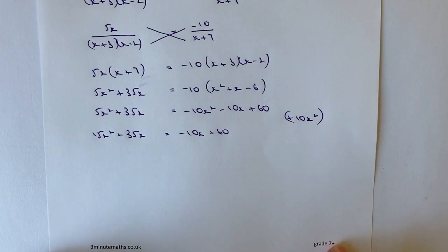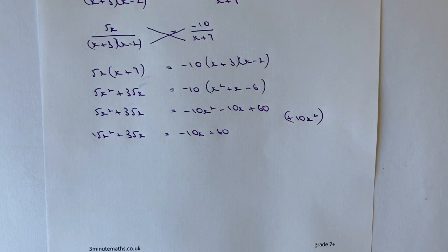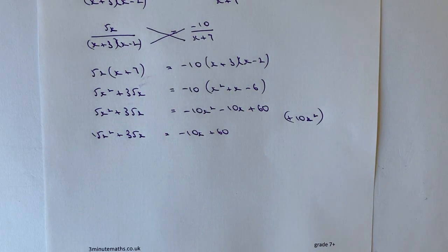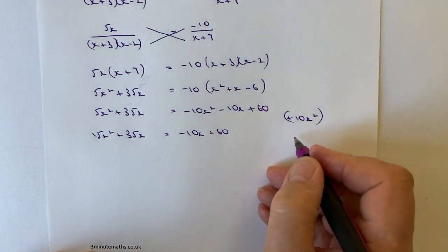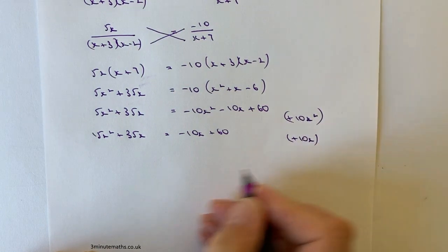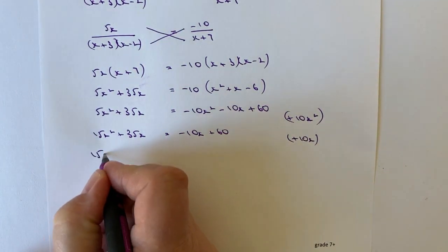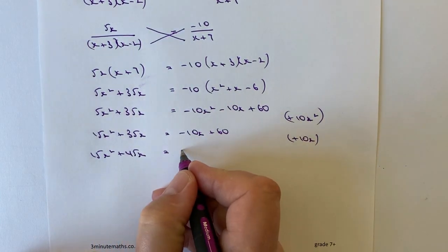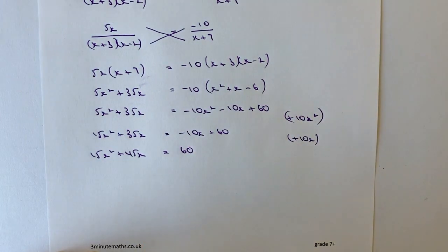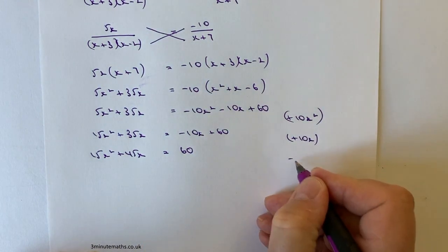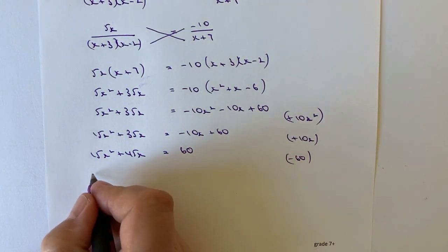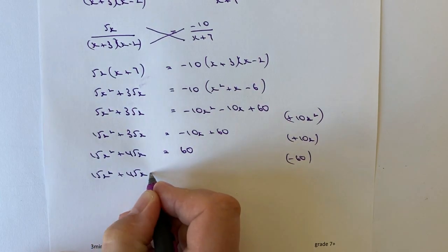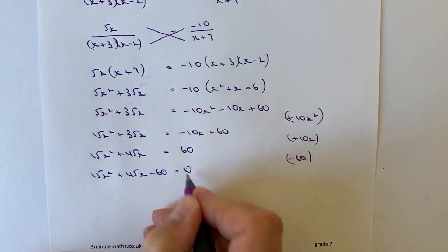The second thing I'm going to do is, I don't want this minus 10x here. I'm going to get it over to the left-hand side by adding 10x. So now I'm going to add 10x, and that's going to give me 15x squared plus 45x, and that equals to positive 60. Now I'm going to minus 60. I'm doing this in a bit of a step-by-step way, but hopefully you can see you're going to end up with 15x squared plus 45x minus 60 equals 0.